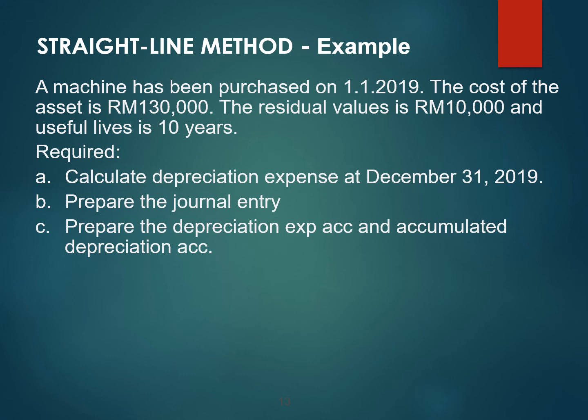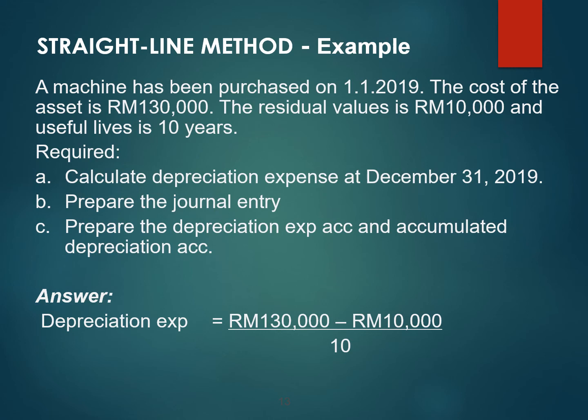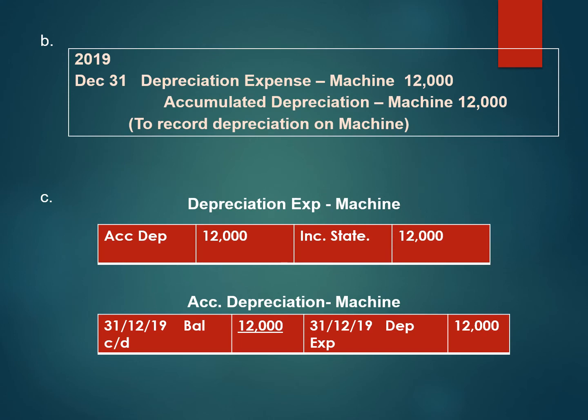Let us answer question A together. Depreciation expense yearly is the cost minus the residual value, divided by the useful life of 10 years, which gives us RM12,000. For question B, we debit depreciation expense — machine RM12,000 and credit accumulated depreciation — machine RM12,000 on 31st December.